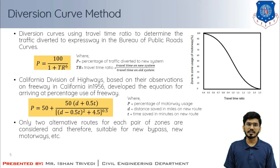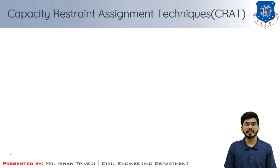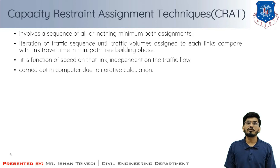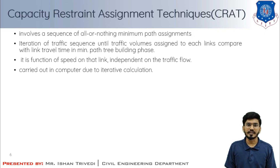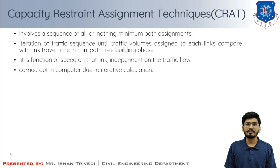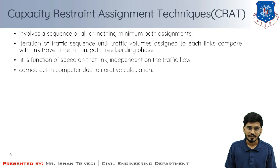Now we understand the capacity restraint assignment technique, also known as CRAT. This technique involves a sequence of all-or-nothing minimum path assignments, where the sequence is iterated until the traffic volumes assigned to each link are comparable with the link travel times assumed in the minimum path tree-building phase. The link travel time used is a function of speed on that link, which depends on the traffic flow being assigned. Because of the iterative nature of the calculations, this technique is carried out entirely by computers.